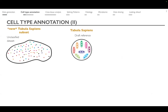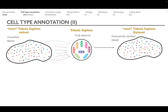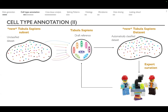Then we have TSP2 — our second donor — which corresponds to a new unclassified subset of Tabula Sapiens. What we really want to do is bring them together and get automatically classified data, to accelerate the process before engaging our experts in a loop of curation that will improve the reference.